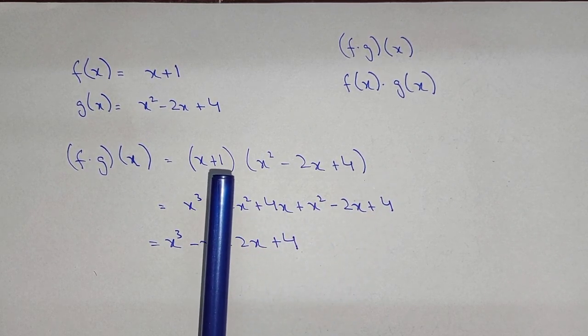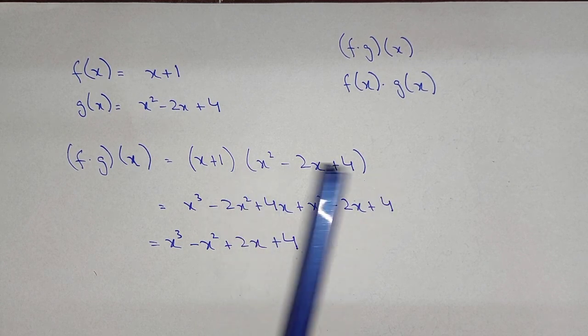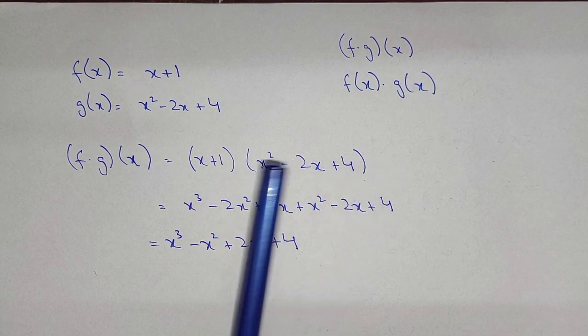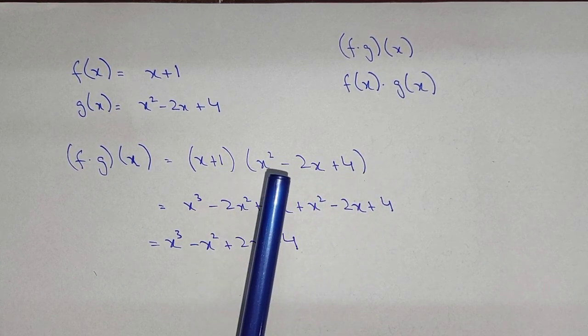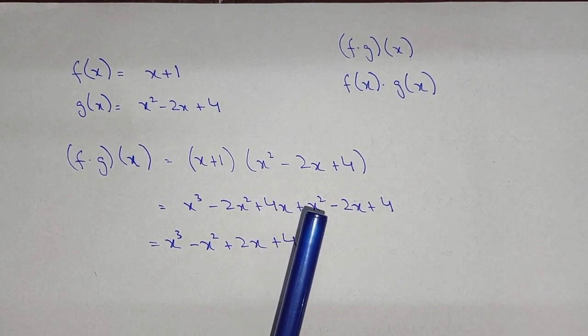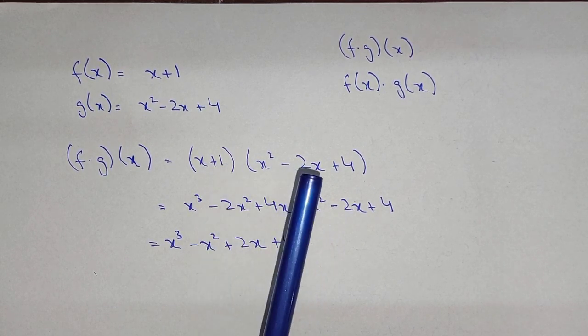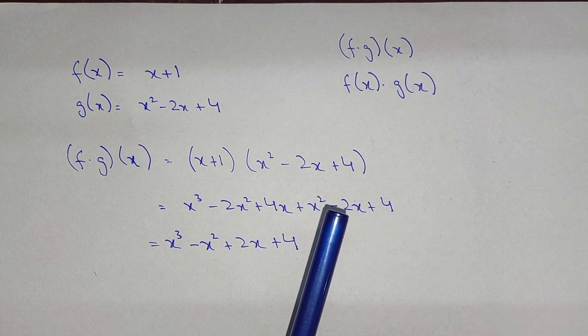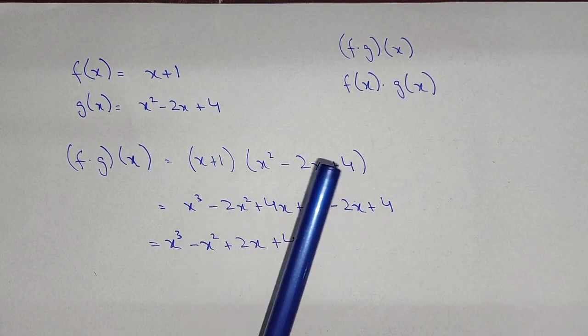And similarly multiply 1 with all the other terms in the next bracket. So 1 multiplied by x square, that will be x square, minus 1 by minus 2 of x, that will be minus 2 of x, and 1 by 4, that will be 4.